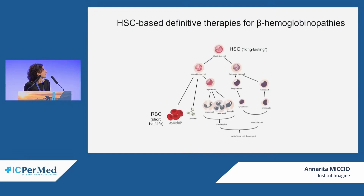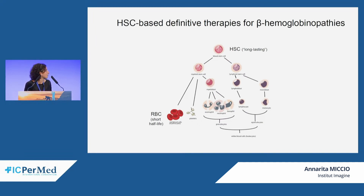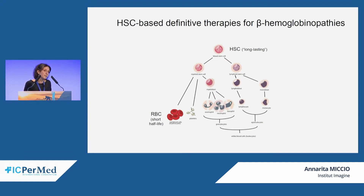HSC-based therapies are definitive because hematopoietic stem cells, by definition, can engraft in the patient and reconstitute the entire hematopoietic system including the red blood cell compartment. On the contrary, red blood cells have a short half-life, so patients who do not undergo allogeneic bone marrow transplantation need continuous red blood cell transfusions because of this short half-life.